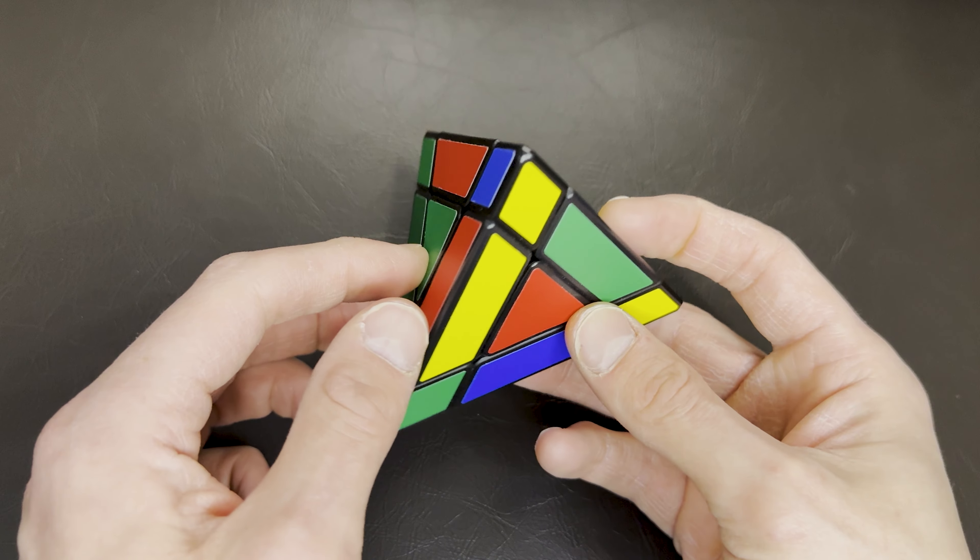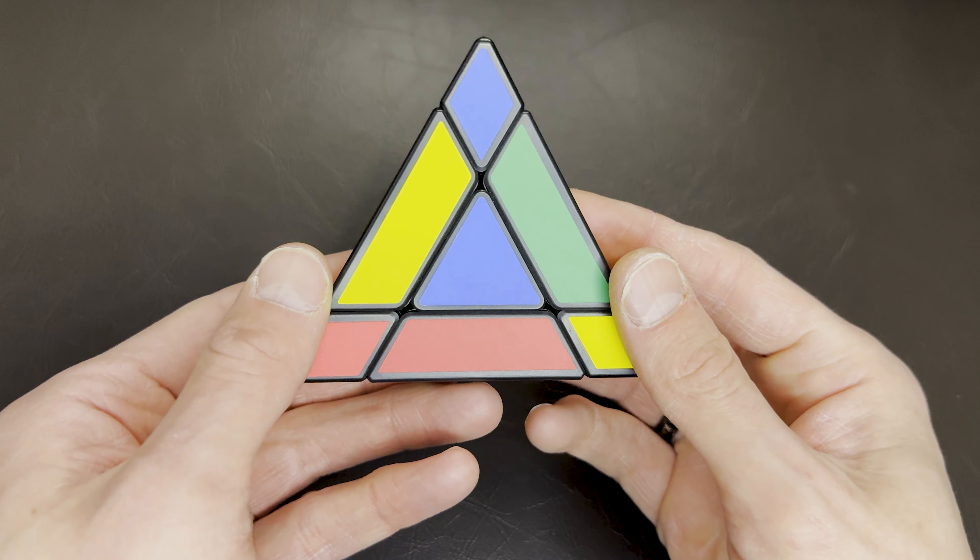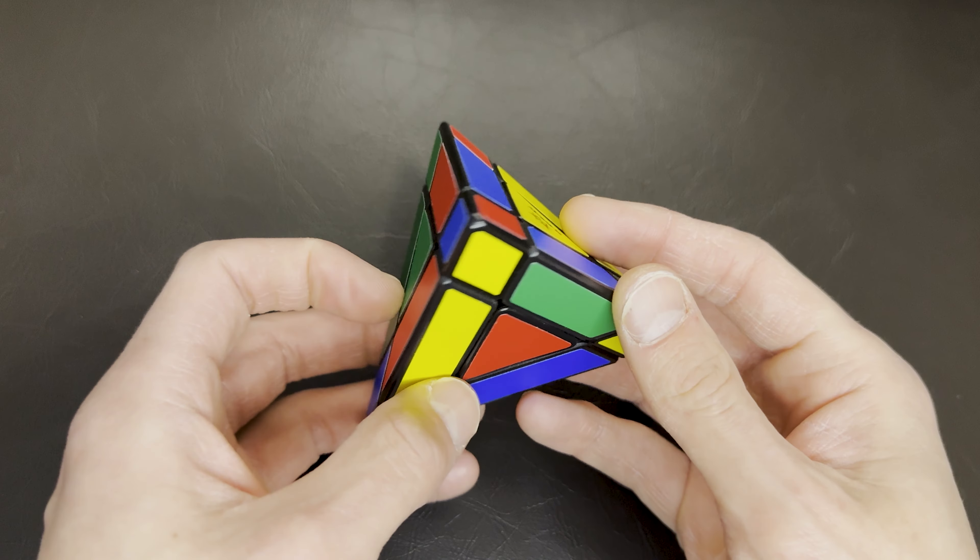This is the Pyraminx edge. It has four sides and they're all triangles. You can solve this one using a couple different moves.